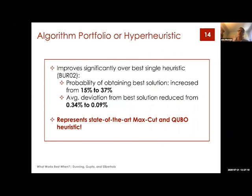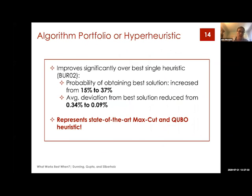For practitioners, probably the most important thing is that we use machine learning — basically fit random forest models — to predict which heuristic works best given a particular instance. This actually outperforms any single heuristic. This algorithm portfolio, or hyper-heuristic, represents a state-of-the-art max cut and QUBO heuristic — it outperforms any single one from the literature. And it's completely accessible to practitioners who want to run it themselves.